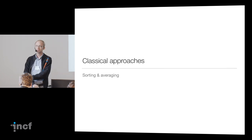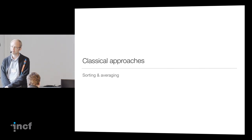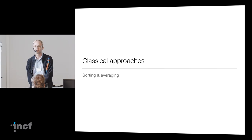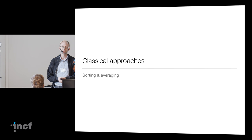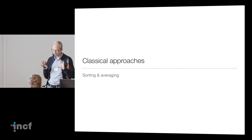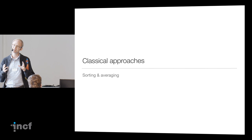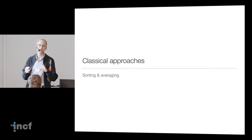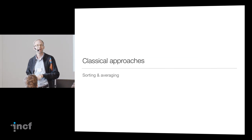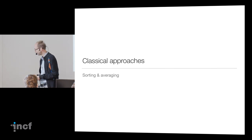Before we go to dimensionality reduction, I want to go through a simpler exercise that will make clearer why this is a useful topic. We're going to look at a particular example, look at the spike trains recorded in this example, and extract them in the classical way — computing peristimulus time histograms — over many many neurons, and just have you wonder what you do with that. That will be the exercise until the break. I call it sorting and averaging.